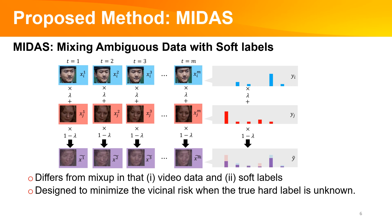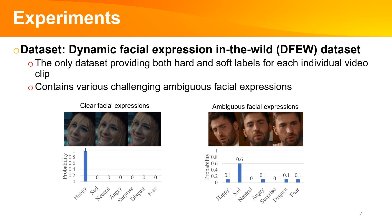Additionally, our approach is designed to minimize empirical risk, particularly when the true hard label is unknown. To assess the effectiveness of our method, we put it to the test using a unique dataset known as DFEW, which stands for Dynamic Facial Expression in the Wild. DFEW is particularly notable as it's the only dataset that provides both hard and soft labels for each video clip, and it encompasses a wide range of ambiguous facial expressions.